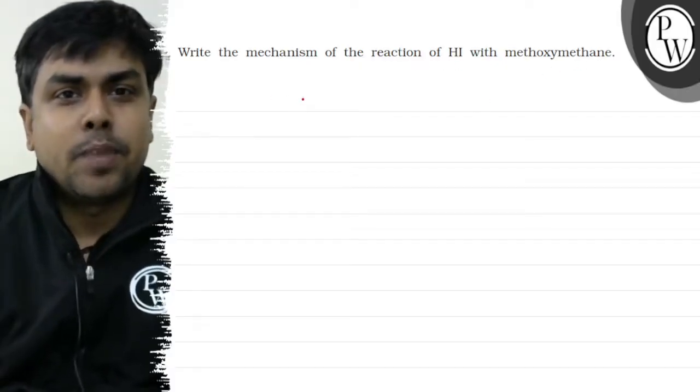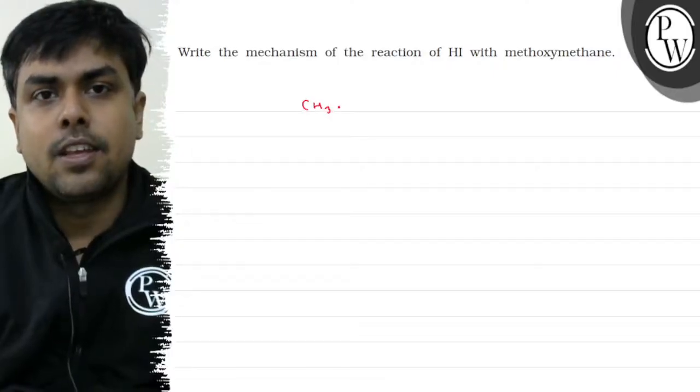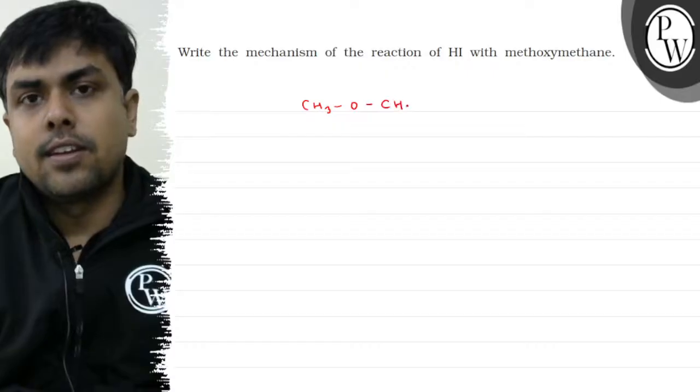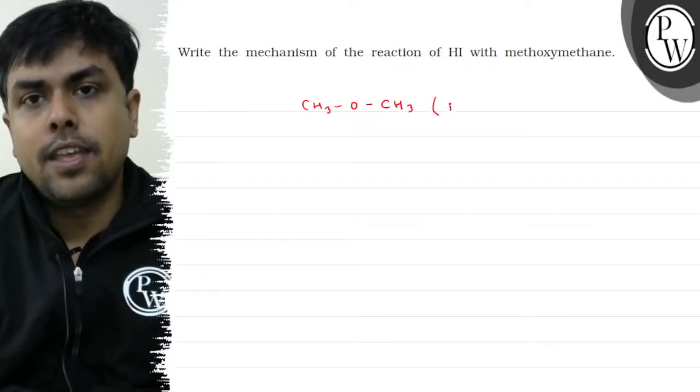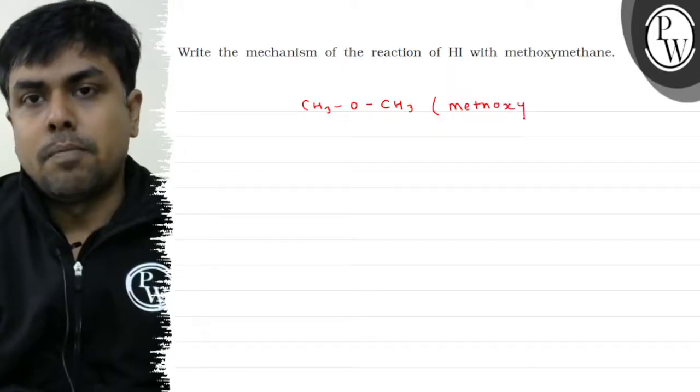First, let's write the molecular formula of methoxymethane: CH3-O-CH3.